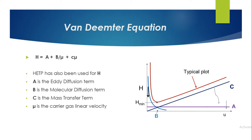The Van Deemter equation states: H = A + B/u + Cu, where HETP is also used for H. A is the eddy diffusion term, B is the molecular diffusion term, C is the mass transfer term, and u is the carrier gas linear velocity.